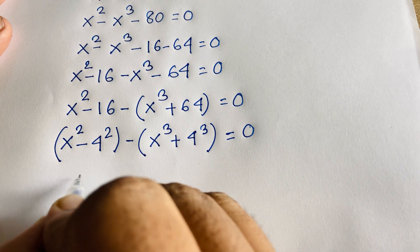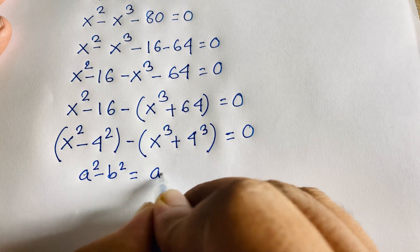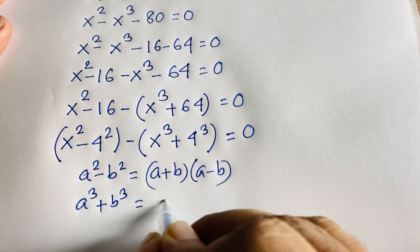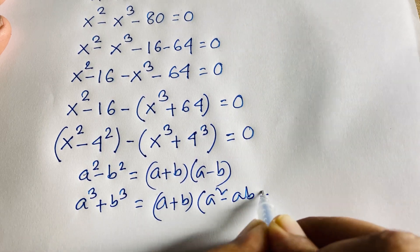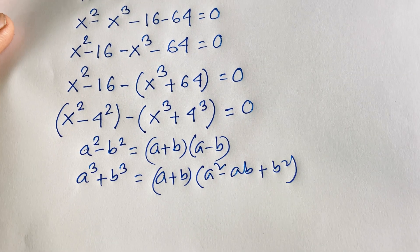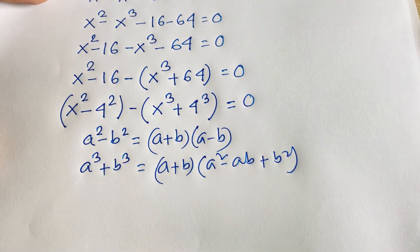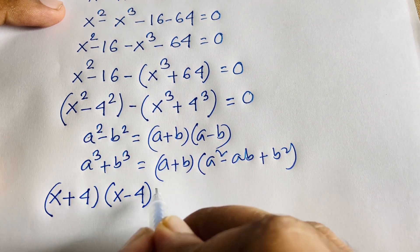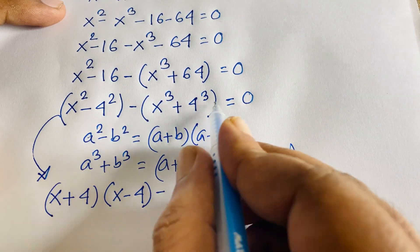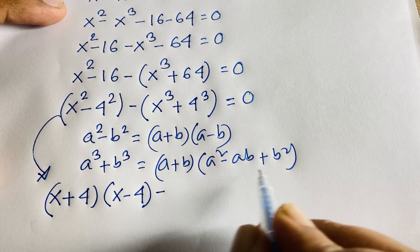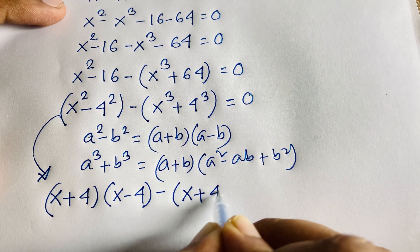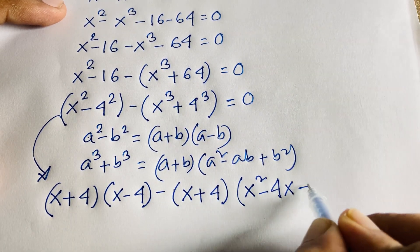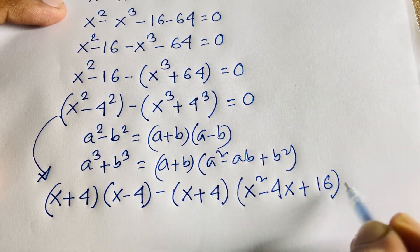We know that a squared minus b squared equals (a plus b)(a minus b), and a cubed plus b cubed equals (a plus b)(a squared minus ab plus b squared). Applying these identities: (x squared minus 4 squared) gives (x plus 4)(x minus 4), and (x cubed plus 4 cubed) gives (x plus 4)(x squared minus 4x plus 16).